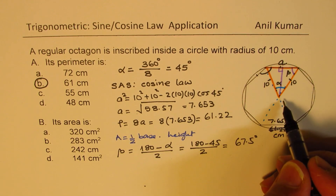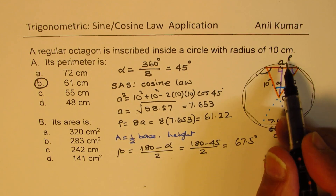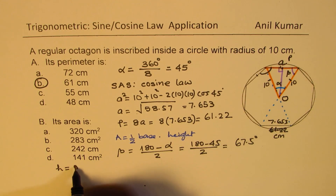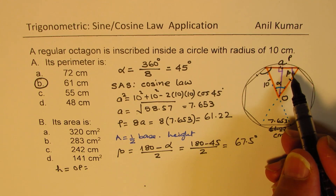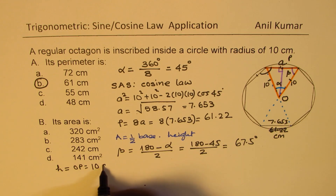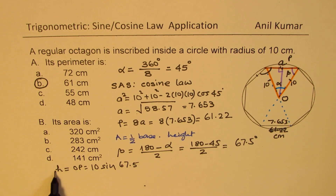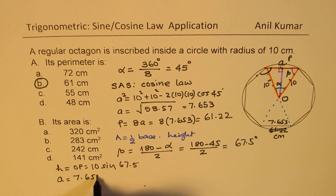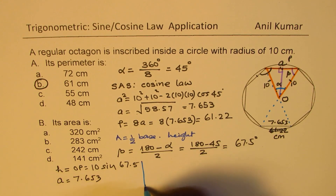Now we can find the height. Let O be the center and P the midpoint of the base. The height OP = 10 × sin(67.5°). We know the base A = 7.653 centimeters, and there are 8 such triangles.